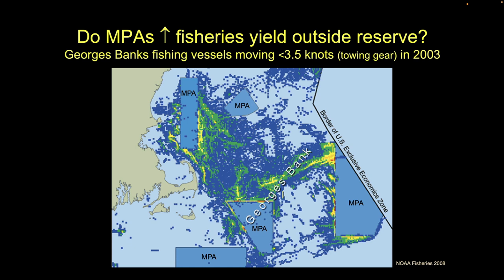The heat map shows each pixel as a grid mark in space — the hotter the color, the more a vessel reported its location there. Specifically, this shows every time a vessel is traveling less than 3.5 knots, which is the speed at which they would be towing nets. Faster than that and they can't effectively fish.